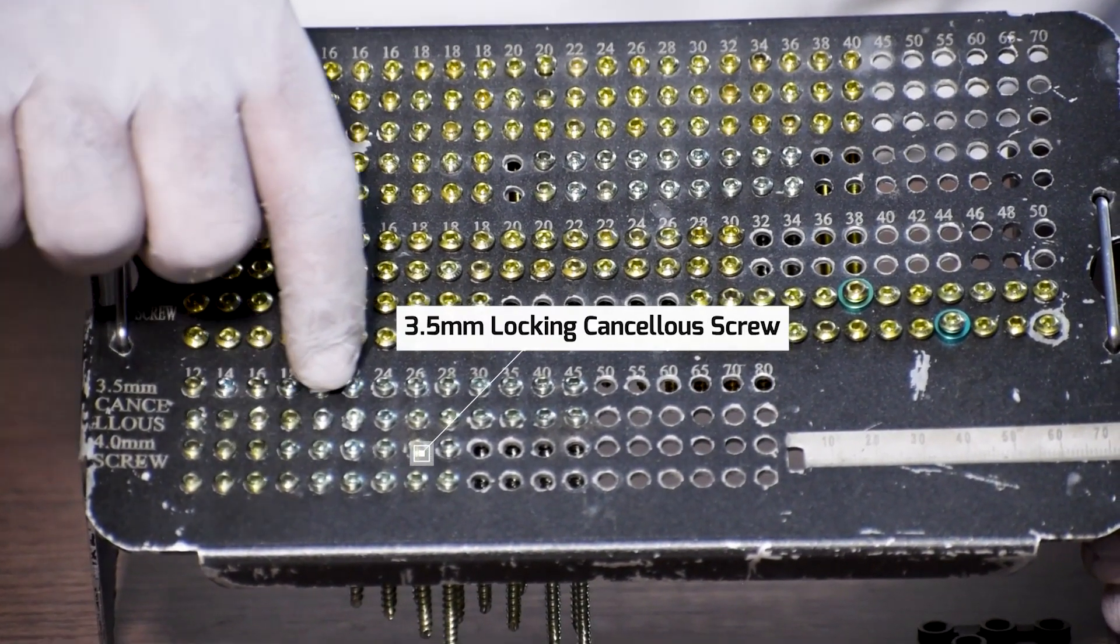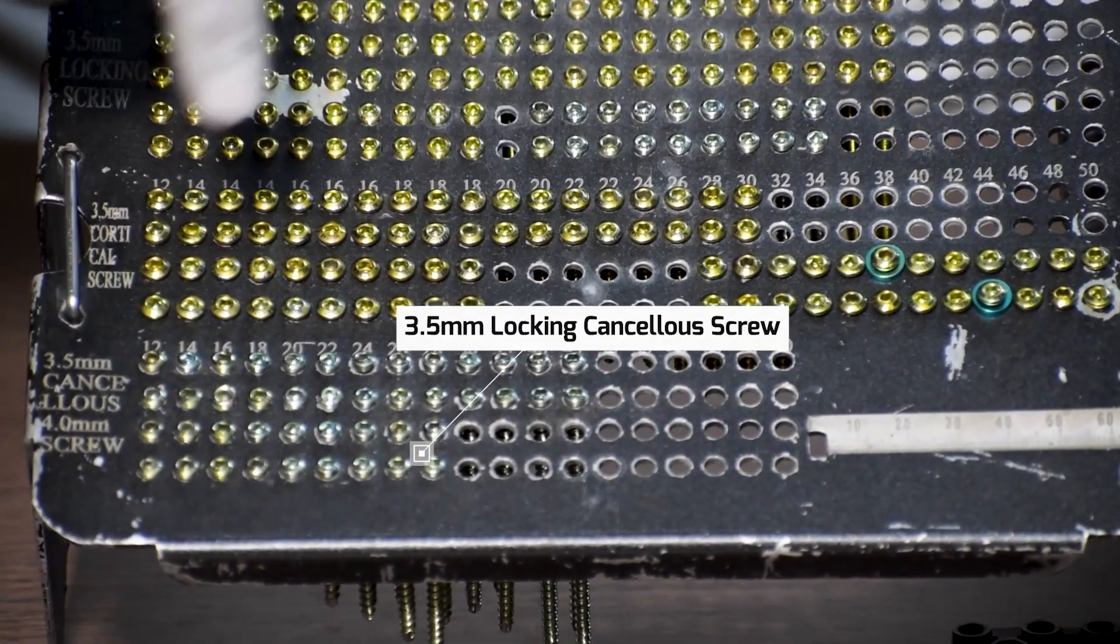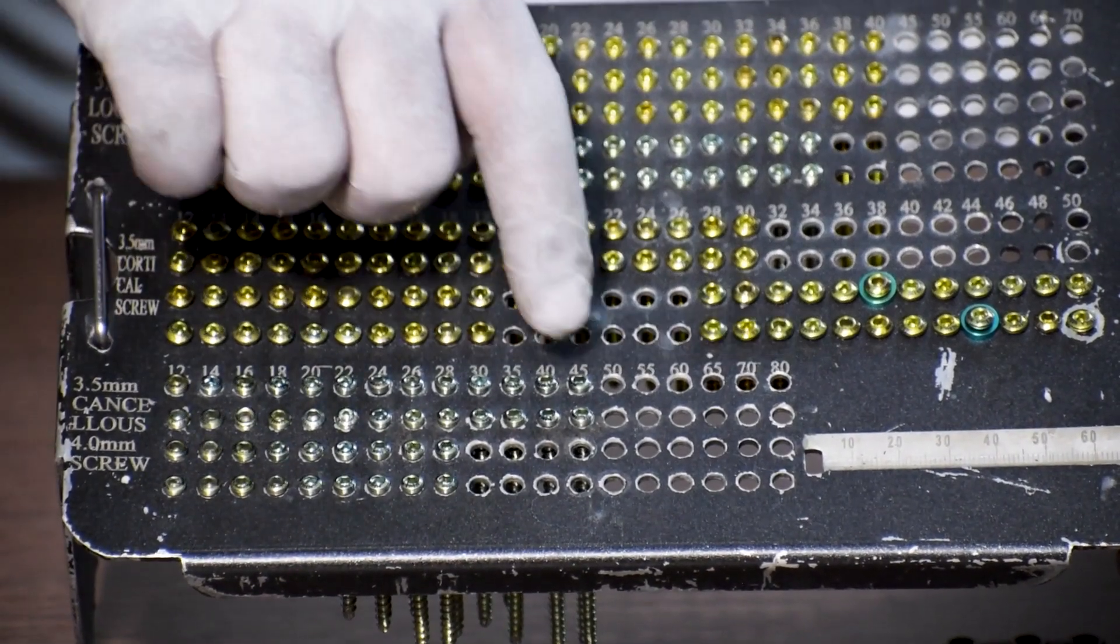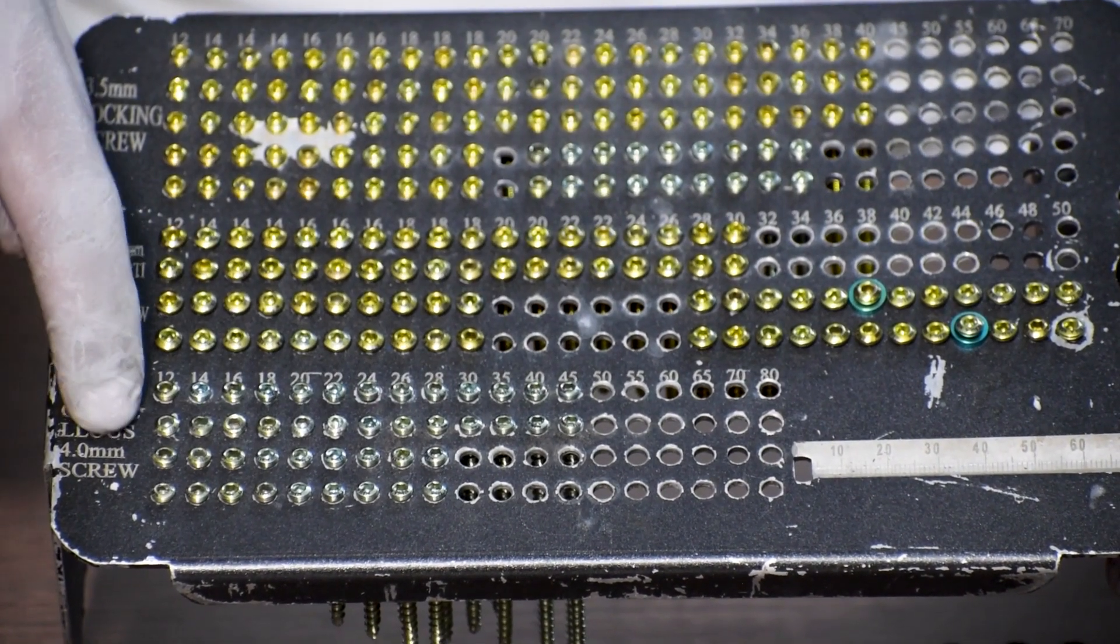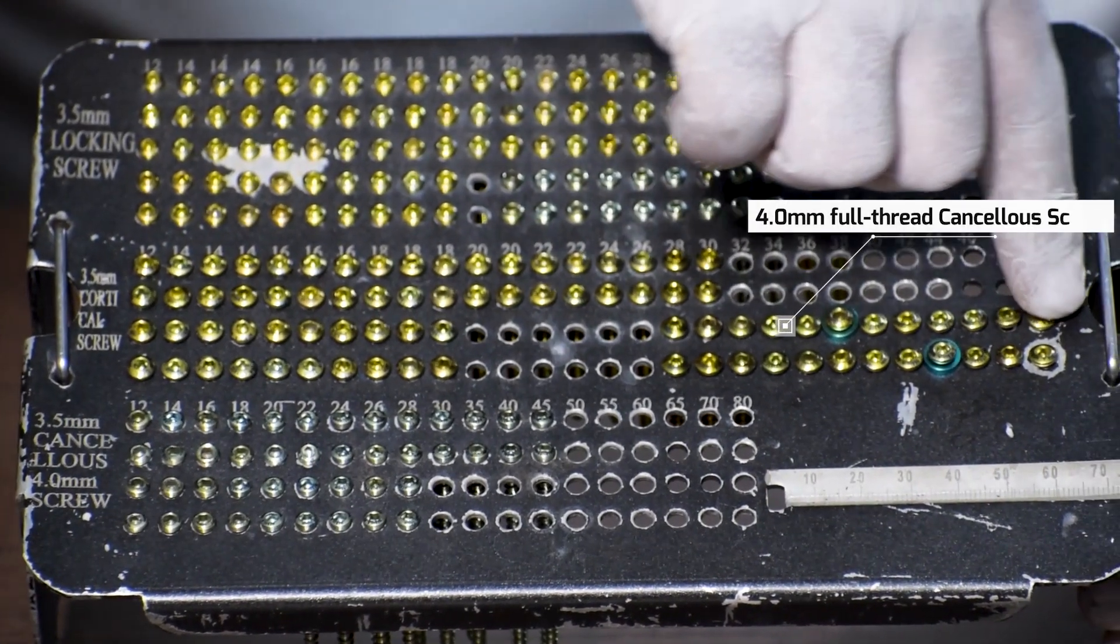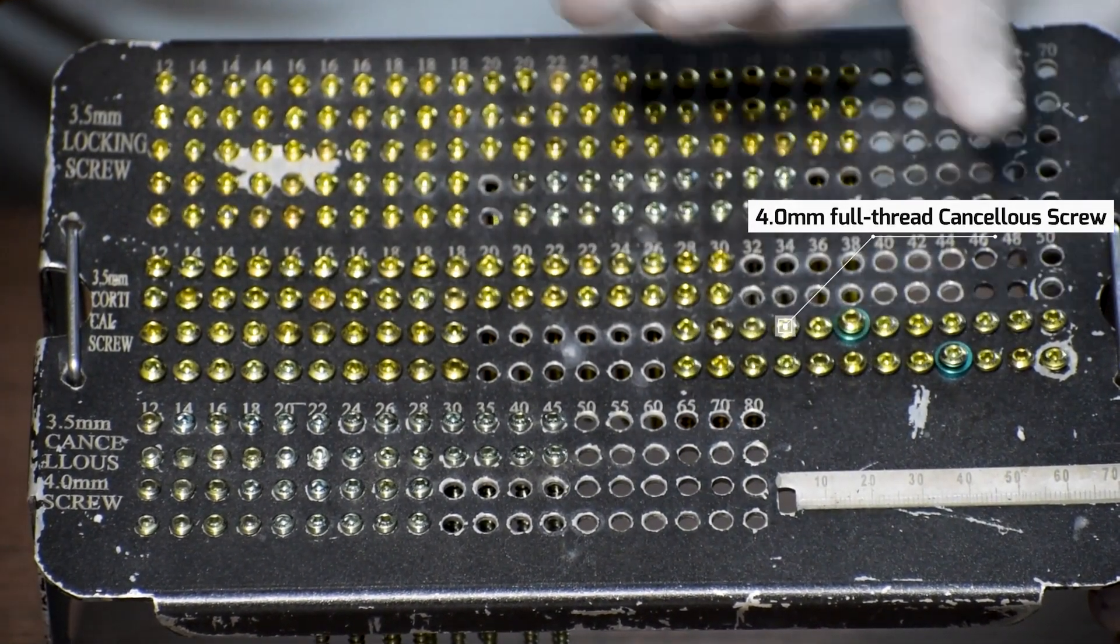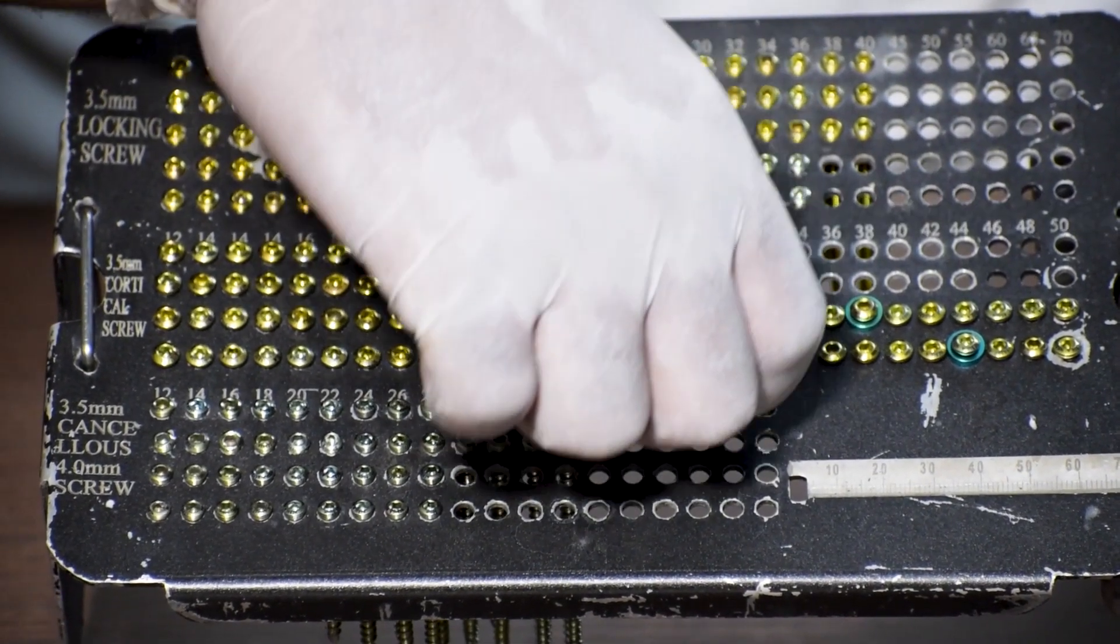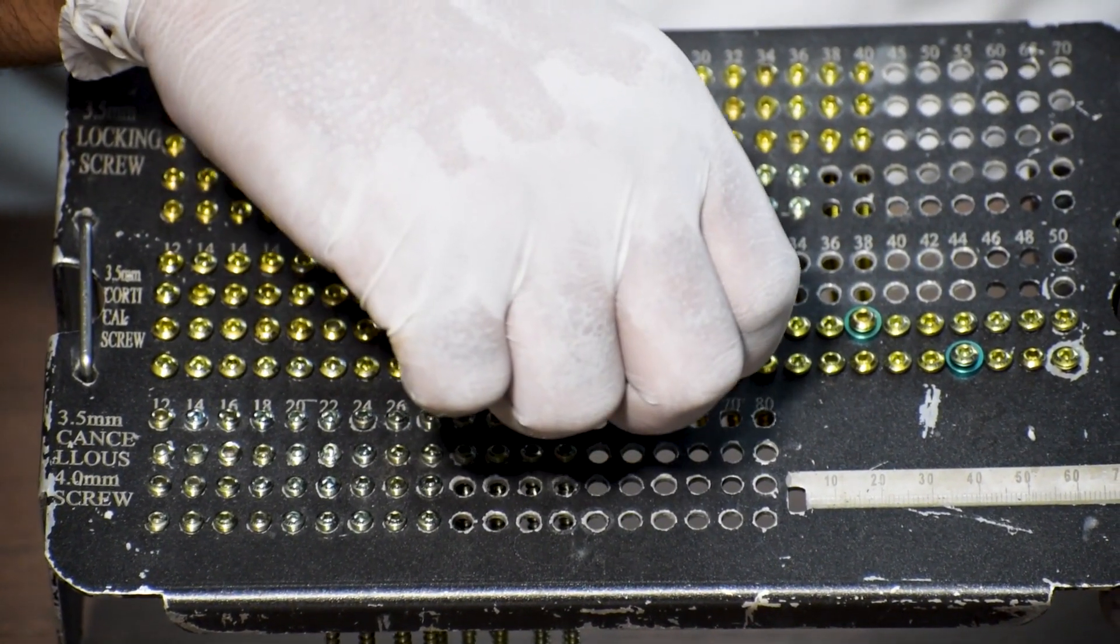These are 3.5 mm locking cancellous screws which is provided from 12 mm to 45 mm and this is 4 mm full-thread cancellous screws. This is also provided from 12 mm to 60 mm.